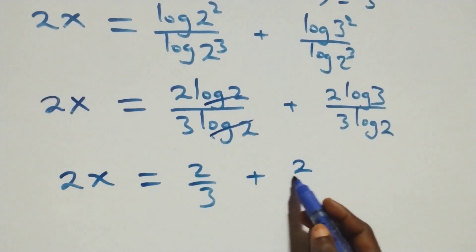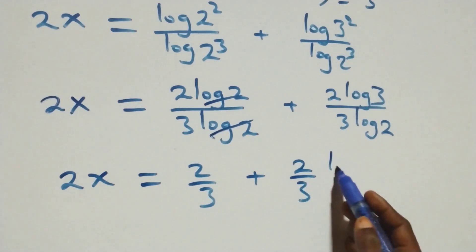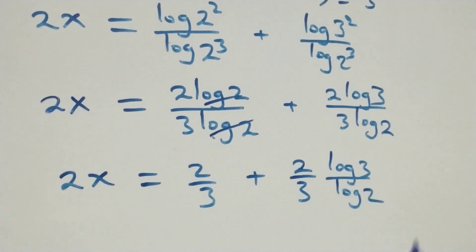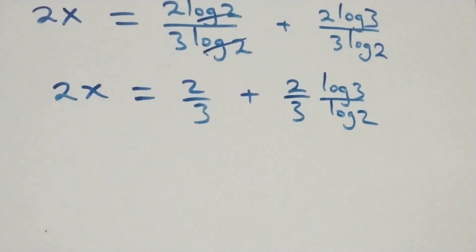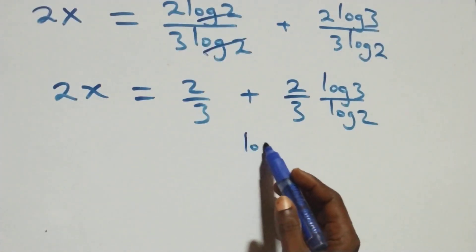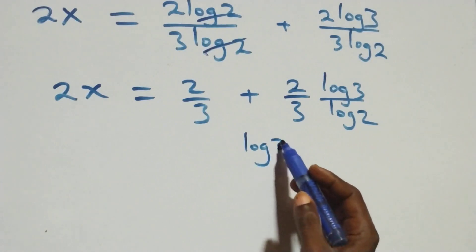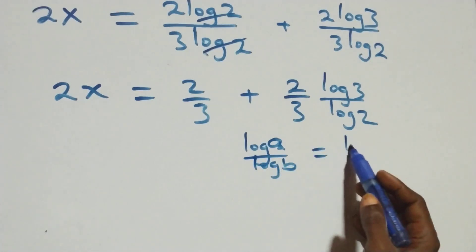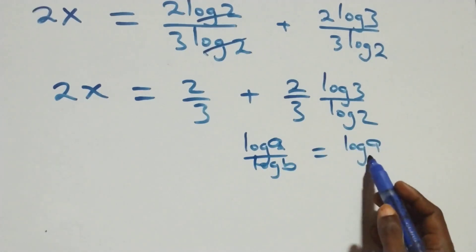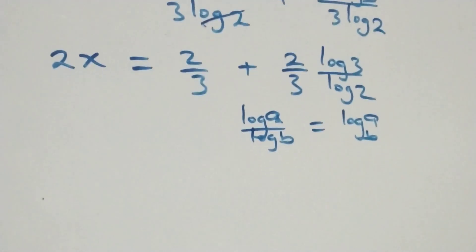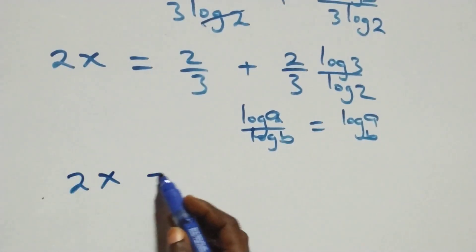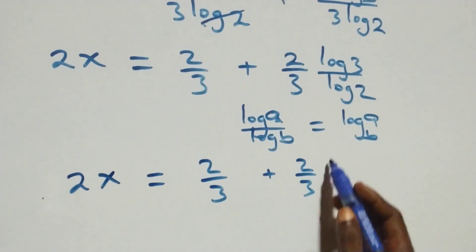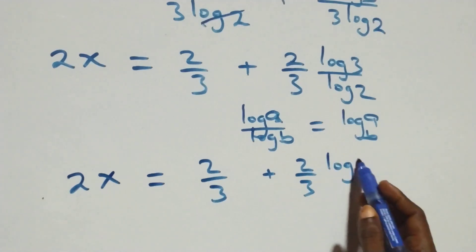The second term can be written as 2/3 multiplied by log 3 over log 2. From here we apply the change of base formula: log a over log b can be expressed as log a to base b. So what we have is 2x equals 2/3 plus 2/3 times log 3 base 2.